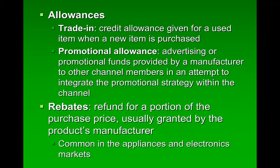Another way to reduce list price is through allowances — specified deductions usually in the form of trade-ins or promotional allowances. Trade-ins, often used in the sale of durable goods such as automobiles, consist of the vendor accepting used merchandise, typically of the same kind as that being bought, as part of the selling price of a new good. A common example is trading in your old vehicle when buying a new one. A promotional allowance is a reduction of the wholesale price as an incentive to retailers or middlemen, compensating the retailer for expenditures made promoting the product. An example is a manufacturer giving a $50 promotional allowance for every 20 cases of soda sold.